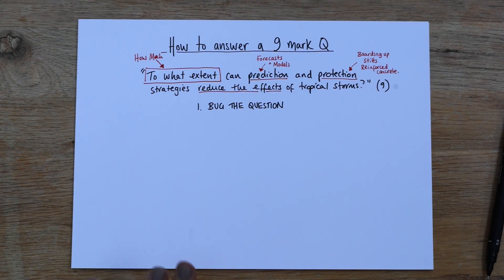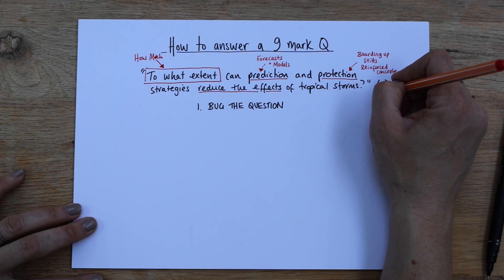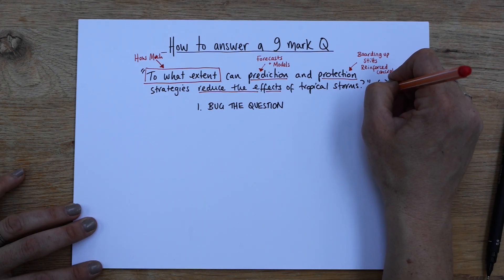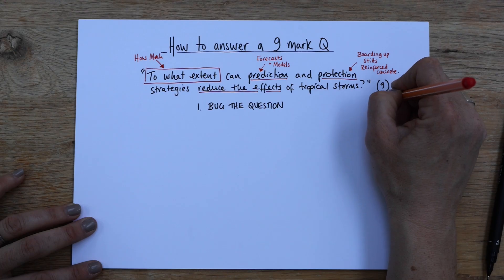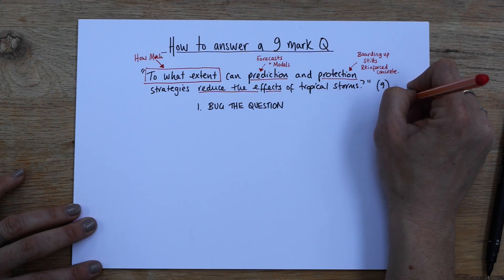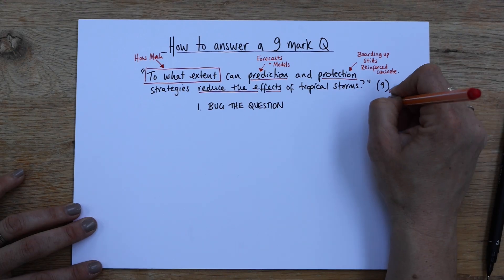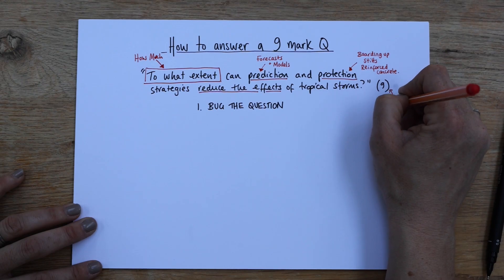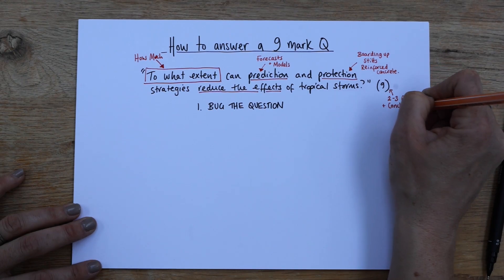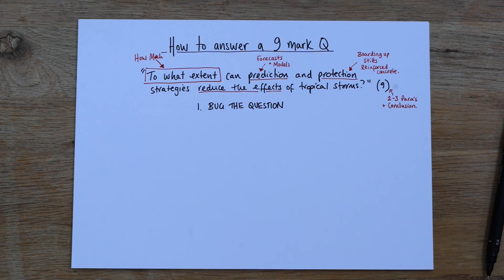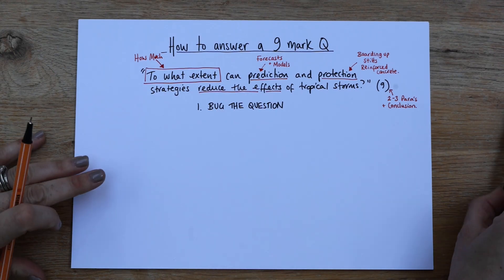And because it's a nine marker, we're going to look at the nine marker. The fact that it's nine means it's two to three paragraphs and a conclusion. If you don't have a conclusion in a nine marker, you really limit yourself from going up to those top grades.